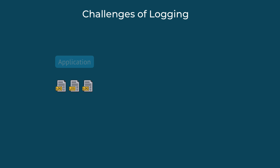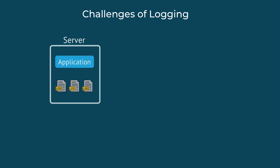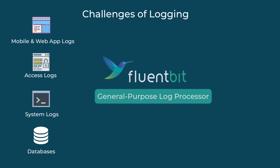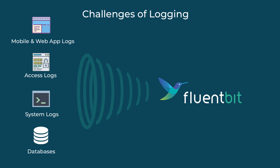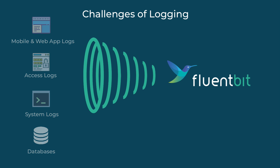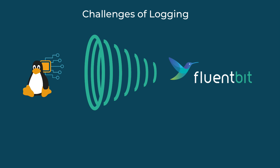Logs can come from different places. They are produced by applications, but also server processes and so on. So you have different sources of logs, and FluentBit is actually a general purpose log processor, meaning it can read and process logs from all these different sources. In addition to collecting logs, FluentBit also has metrics collection capabilities for embedded Linux systems.